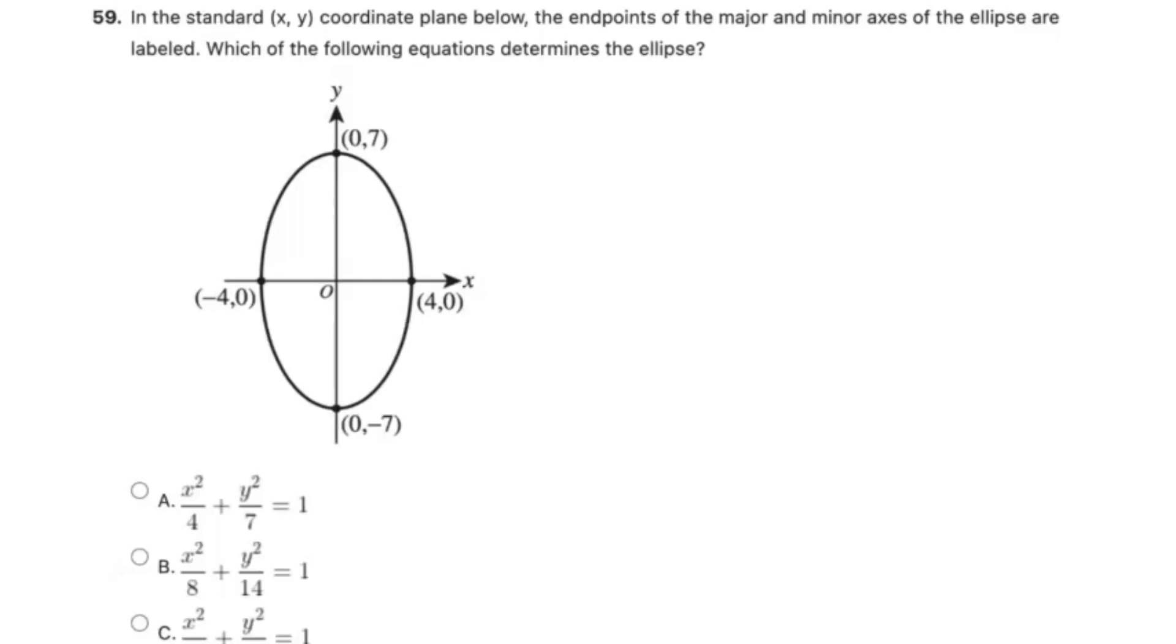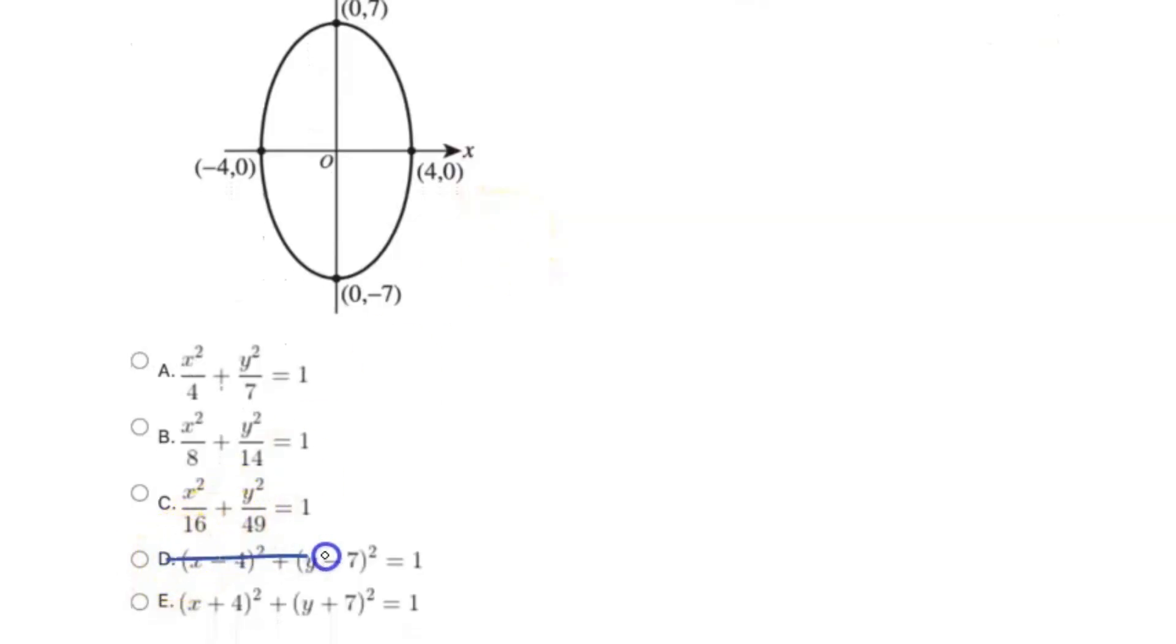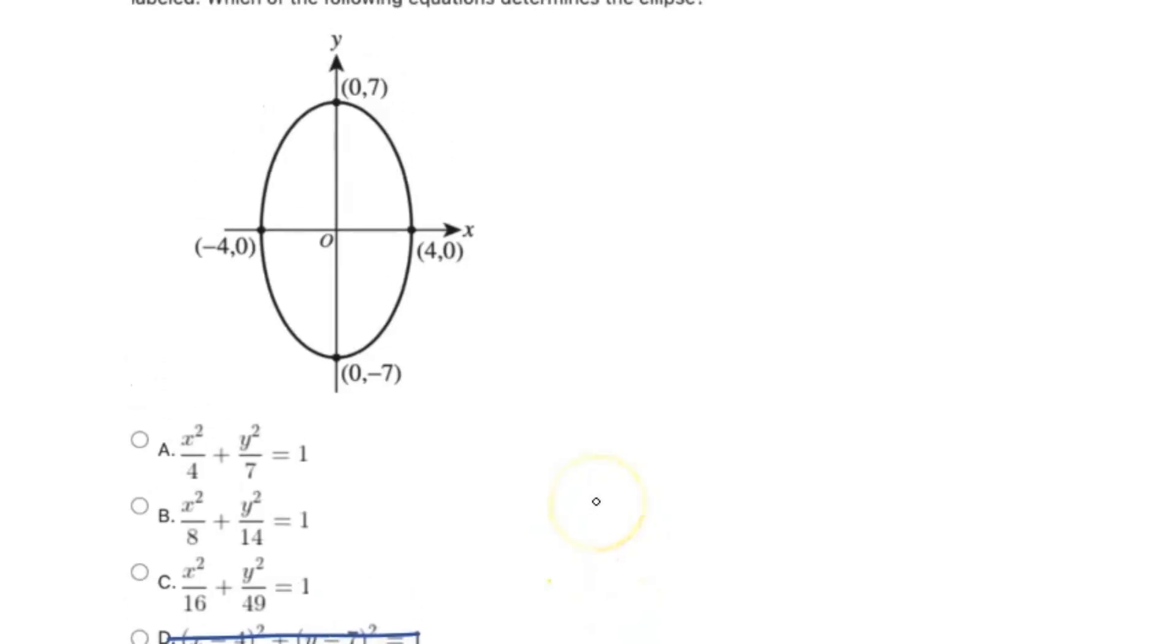This ACT math problem says, in the standard XY coordinate plane below, the endpoints of the major and minor axes of the ellipse are labeled. Which of the following equations determines the ellipse? We see our answer choices. Let's cross off D and E because those both represent standard forms for a circle, and we're dealing with an ellipse here.